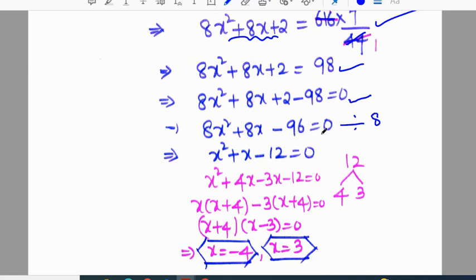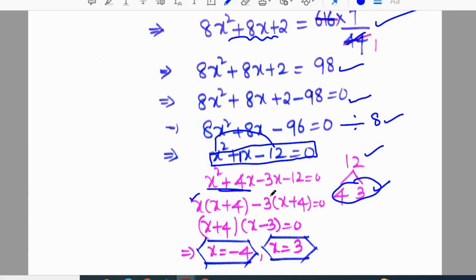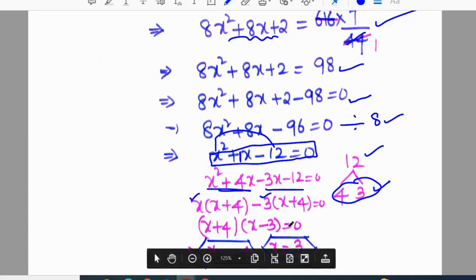44 by 7 goes to the other side will become reciprocal 7 by 44. We get 8x square plus 8x plus 2 equals 14. Moving 14 to the other side: 8x square plus 8x minus 96 equals 0. All terms divisible by 8: x square plus x minus 12 equals 0. Factoring: x plus 4 into x minus 3 equals 0. X is equal to -4 and x is equal to plus 3.